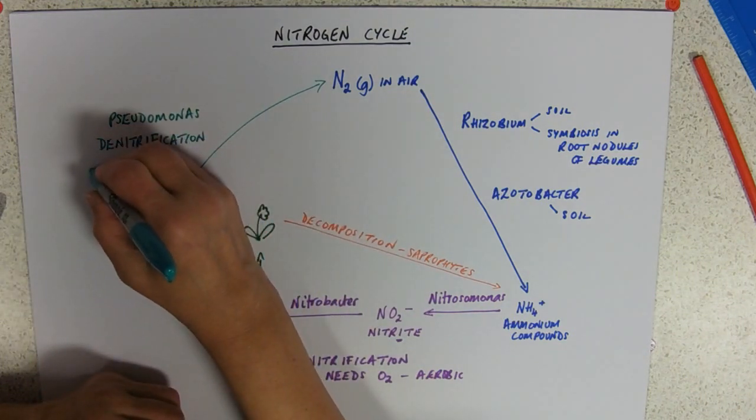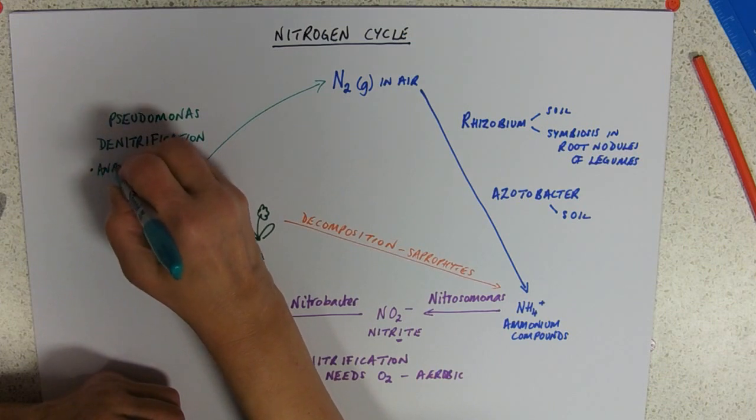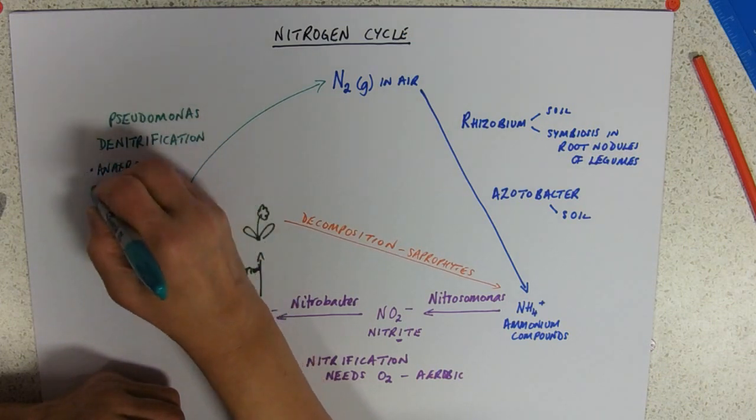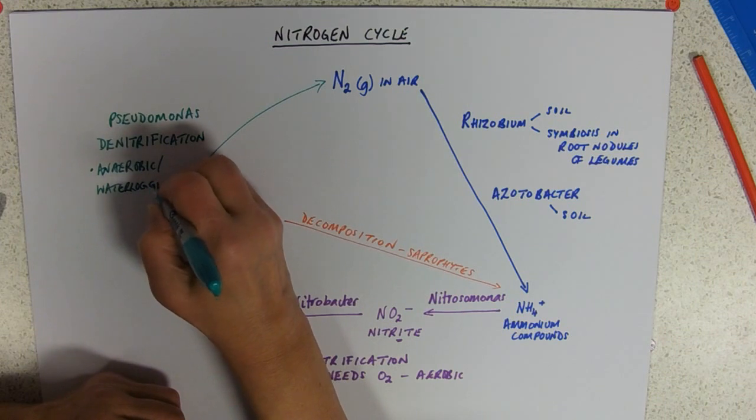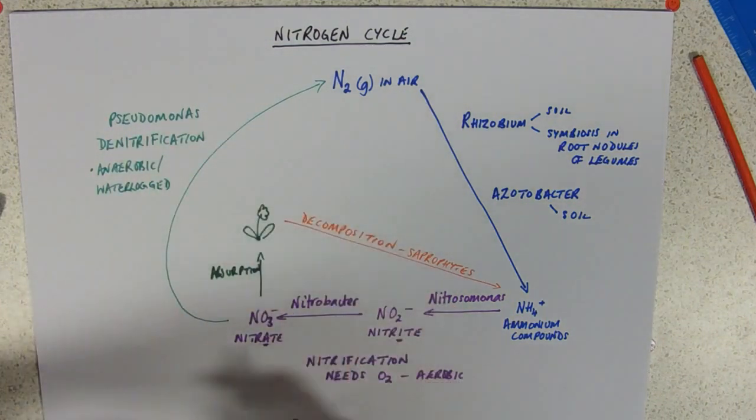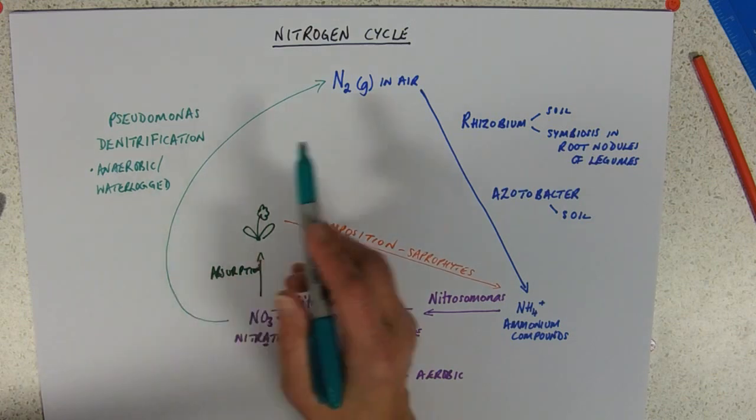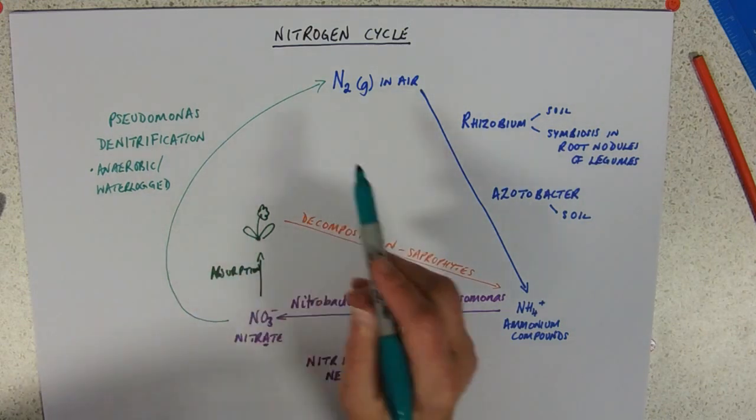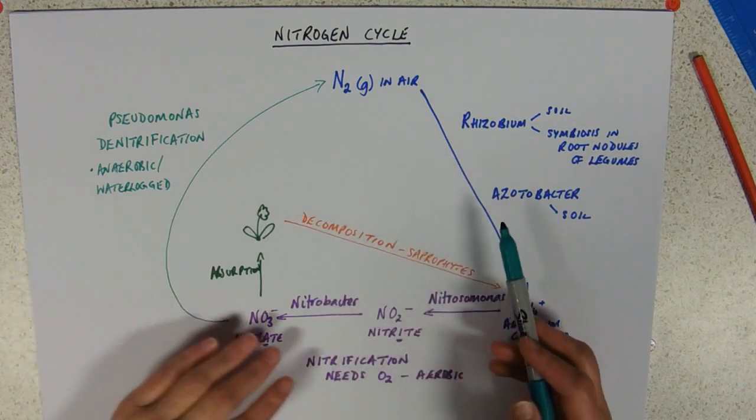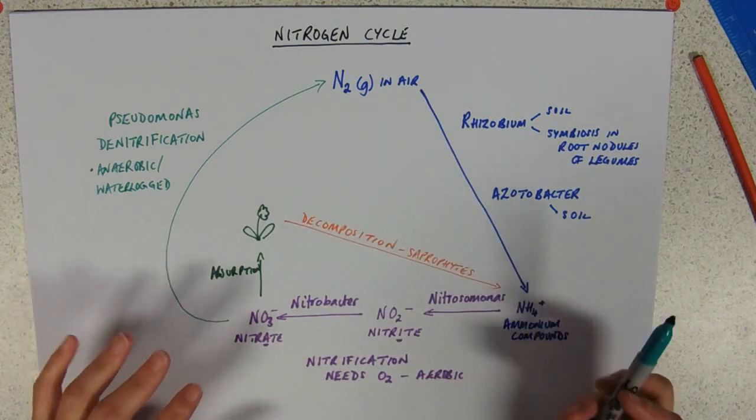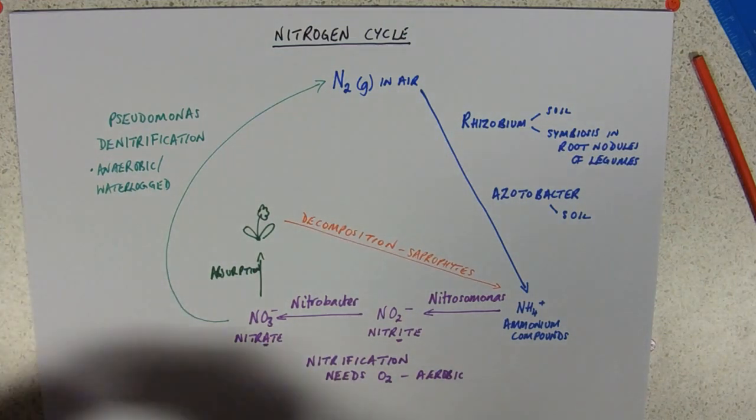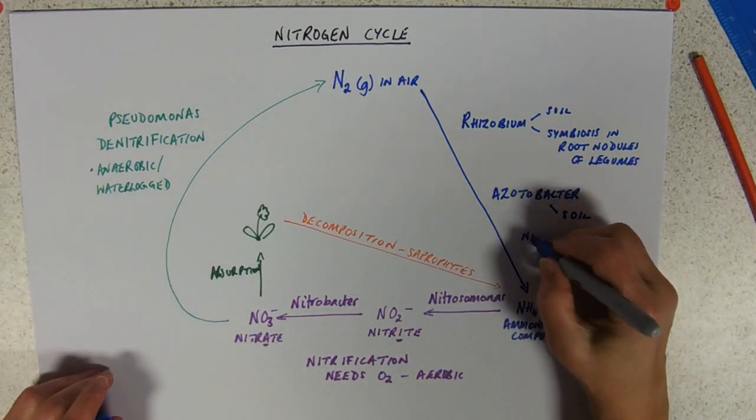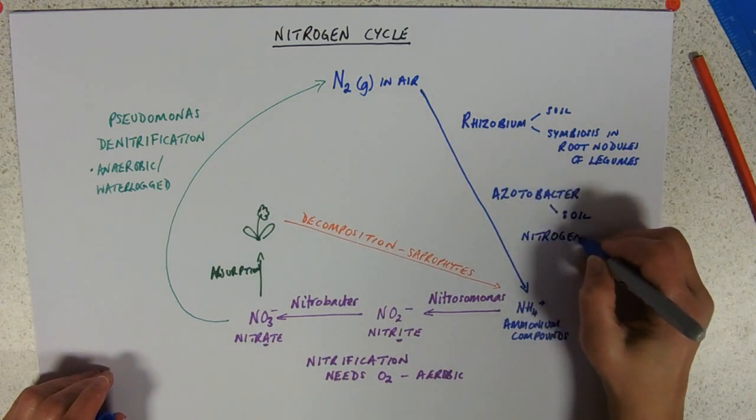And this happens in anaerobic or waterlogged soil. So if a soil is waterlogged, all the air spaces are filled up with water and they're sort of anaerobic. Things like peat bogs do a lot of denitrification. And therefore, because they're taking a lot of nitrate out of the soil, that soil is less fertile. So let's just put this process over here in. So, this is nitrogen fixation.